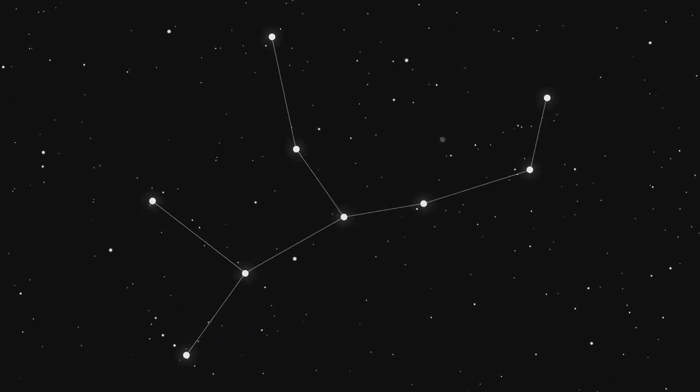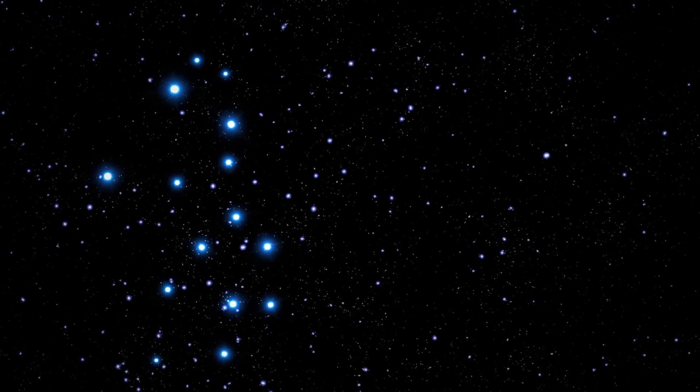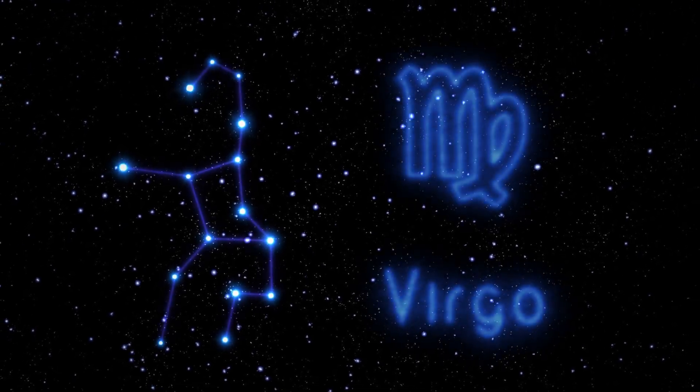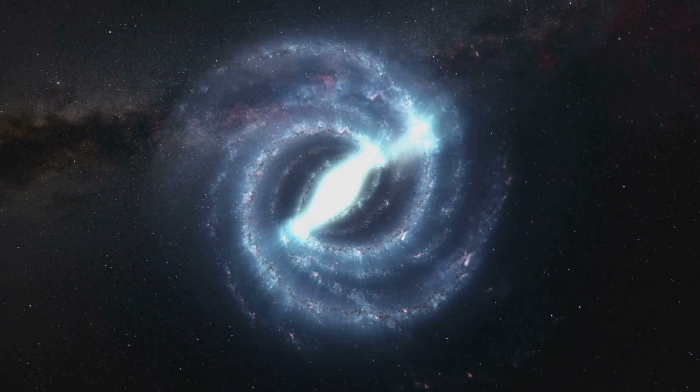Situated in the constellation Virgo, this galaxy is approximately 75 million light-years away from our home planet Earth. It's a mind-boggling distance to comprehend, isn't it? But let's not get lost in the vastness of space just yet. Let's talk more about NGC 5584 itself.